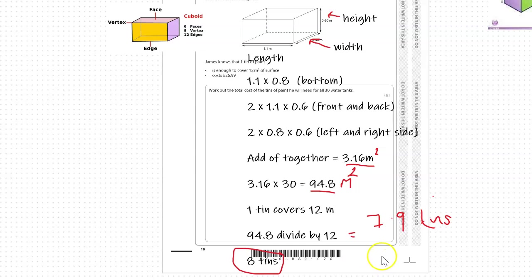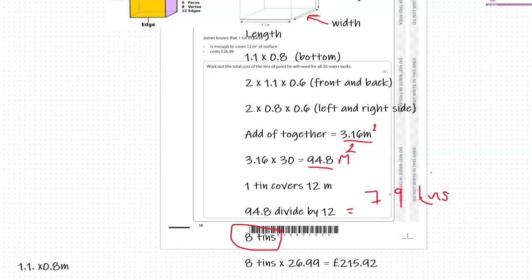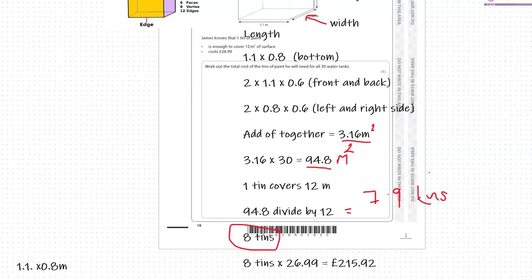We now know that 8 tins are needed at £26.99 each. We need to work out the total cost, so 8 times 26.99 equals £215.92.